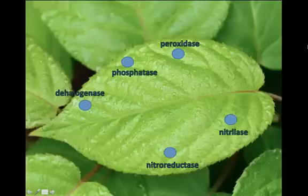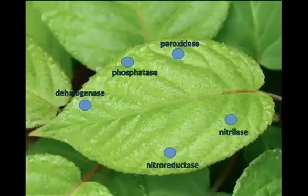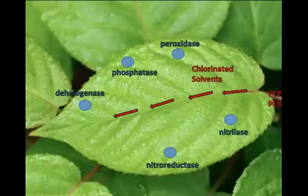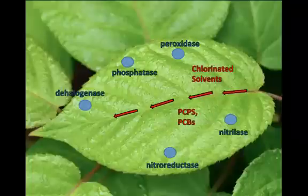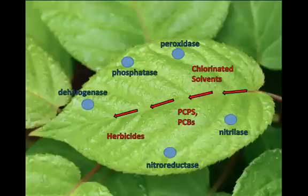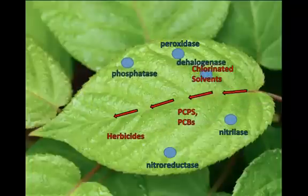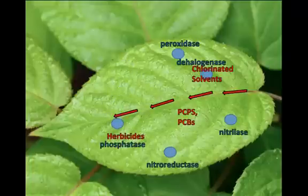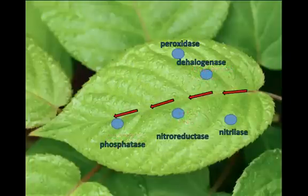Similar to rhizodegradation, phytodegradation breaks apart the toxins and converts them into safe compounds. Phytodegradation utilizes enzymes instead of microorganisms. These enzymes are capable of breaking down chlorinated solvents, PCPs, PCBs, herbicides and pesticides. As the plant uptakes these toxins, the enzymes convert them into non-toxic compounds, therefore remediating the soil.